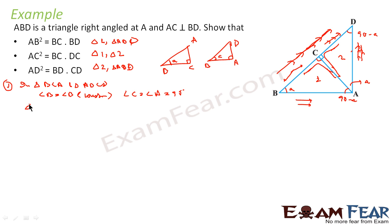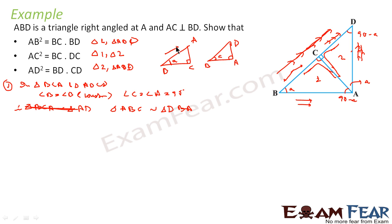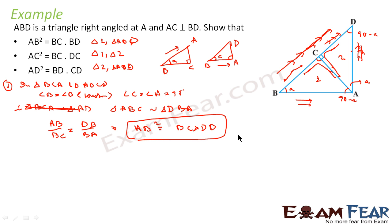We can write that angle B equals angle B by construction, and angle C equals angle A equals 90 degrees. Therefore triangle ABC is similar to triangle DBA. Now I need AB². Writing the ratio: AB/BC equals DB/BA, which gives AB² equals BC into DB. And that is what we are supposed to prove.